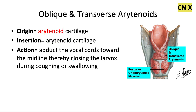Next, we have the oblique and transverse arytenoids. The transverse are horizontally oriented and the oblique are diagonally oriented. They originate and insert into the arytenoid cartilage. Their action is opposite — they adduct the vocal cords toward the midline, thereby closing up the larynx during something like coughing or swallowing.